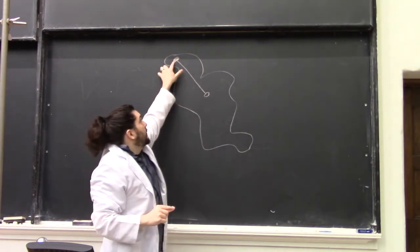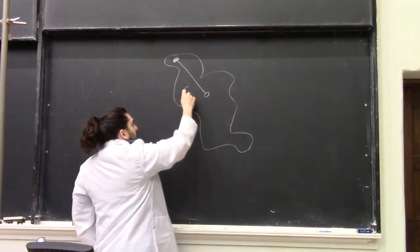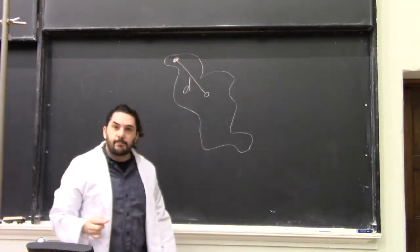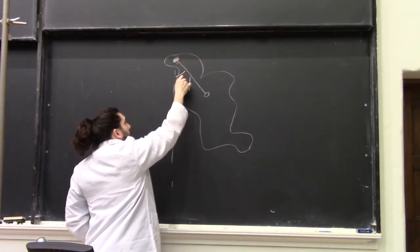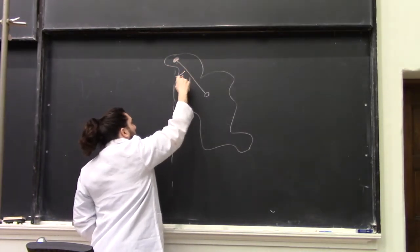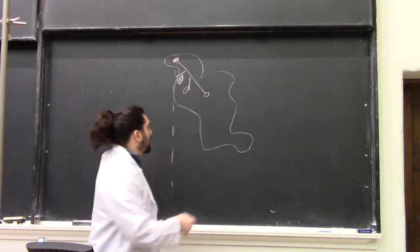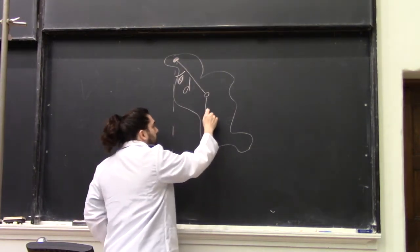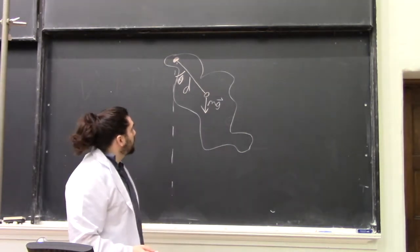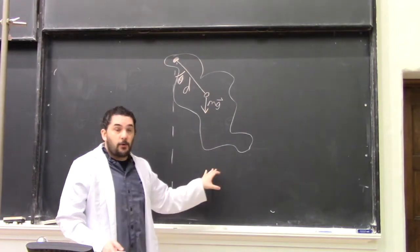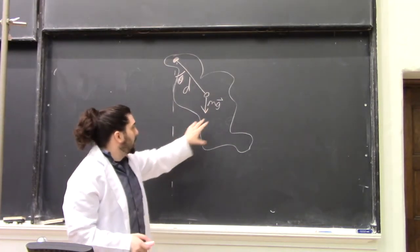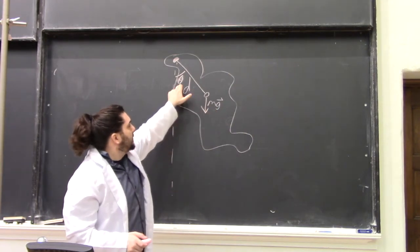We'll call the distance from the fulcrum to the center of mass D. Gravity is going to pull down with the weight of the object at its center of mass. So the torque restoring this to the vertical is going to be MGD sine theta.